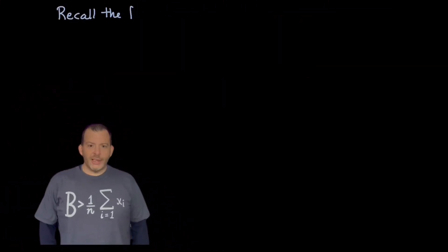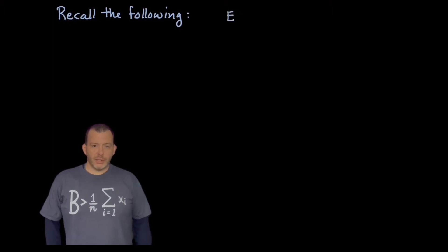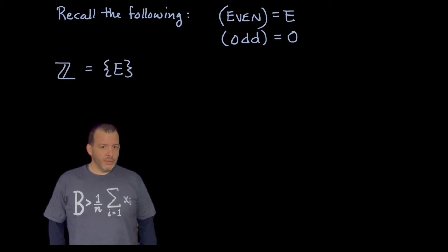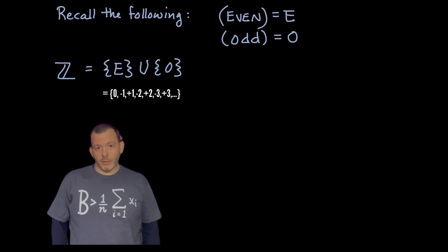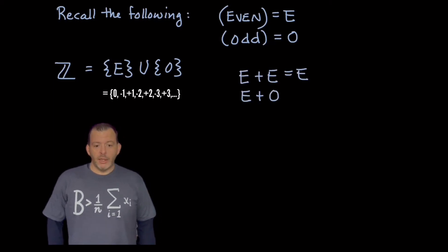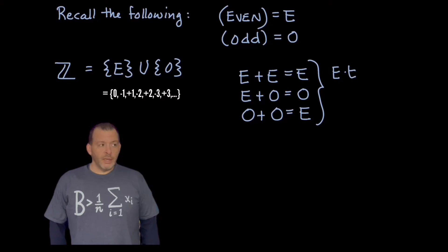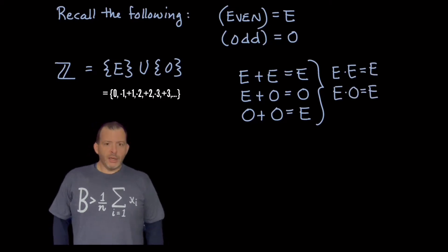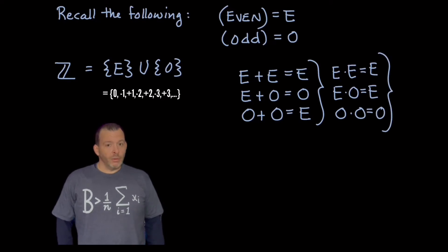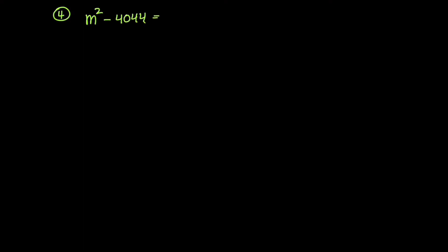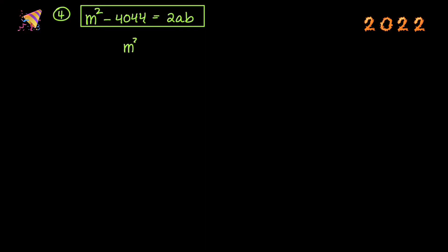A little review about integers: the set of integers can be partitioned into two sets, the evens and the odds. Anytime we take two even numbers, two odd numbers, or an even and odd number and add them, they produce a specific result — even + even = even, even + odd = odd, and so on. The product of two even numbers, or an even and odd, or two odds also comes out a specific way. Playing around with the equation m² − 4044 = 2ab, we can show that m² is an even number.